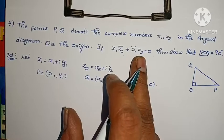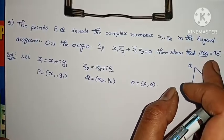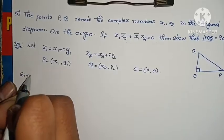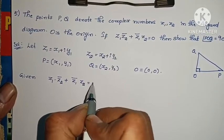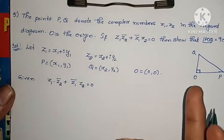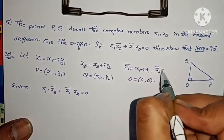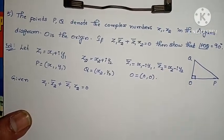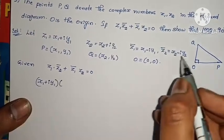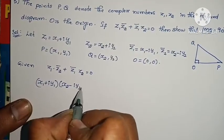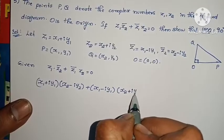Given: Z1·Z2̄ + Z1̄·Z2 = 0. We need to show OP is perpendicular to OQ. We know Z1̄ = x1 − iy1 and Z2̄ = x2 − iy2. We will substitute these into the given condition.